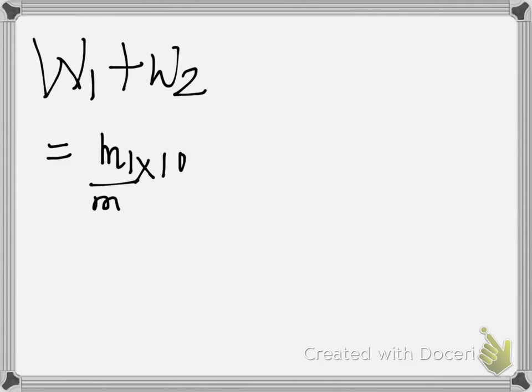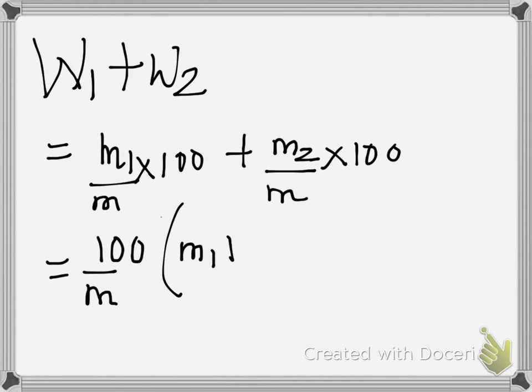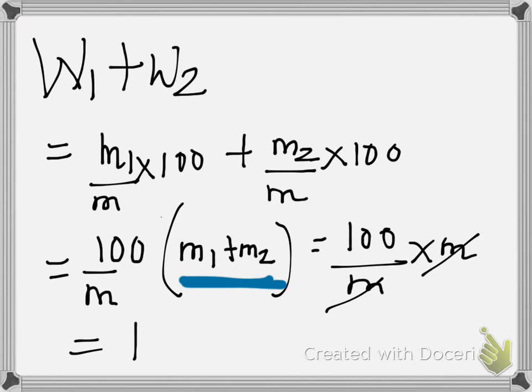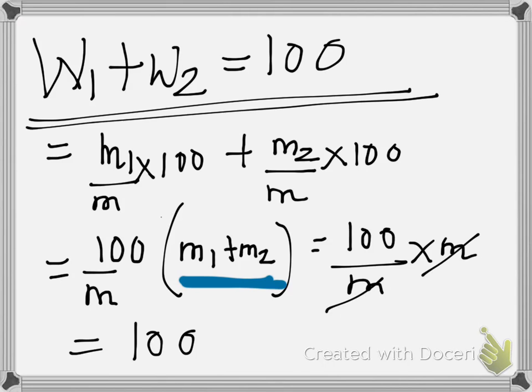Now it's very obvious that if I add W1 plus W2, which is nothing but m1 upon m into 100 plus m2 by m into 100. I take out m common in the denominator as well as 100, I get m1 plus m2. But I know m1 plus m2 is nothing but m, right? So 100 upon m into m, so finally I get this as 100. So the addition of weight percent is always equal to 100. So this was about weight percent.